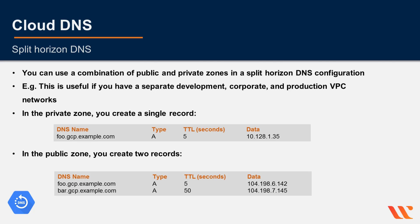A query for bar.gcp.example.com from a VM in your VPC network returns a domain error because there is no record for bar in the private zone. A query for bar from the internet will return the correct address 104.198.7.145.